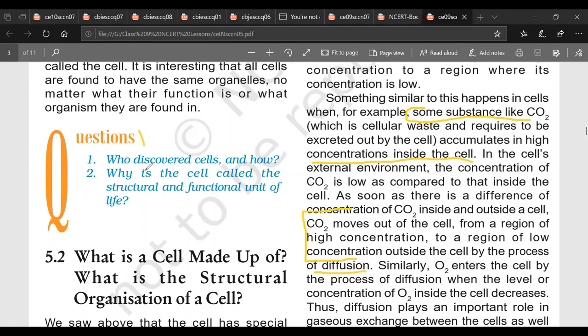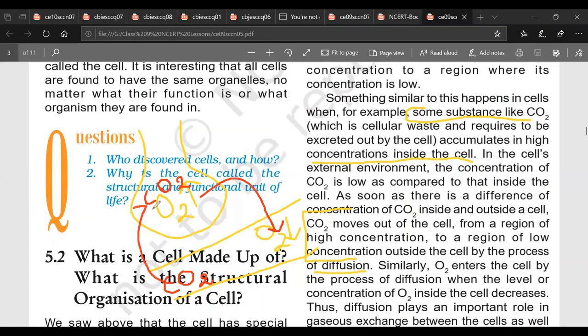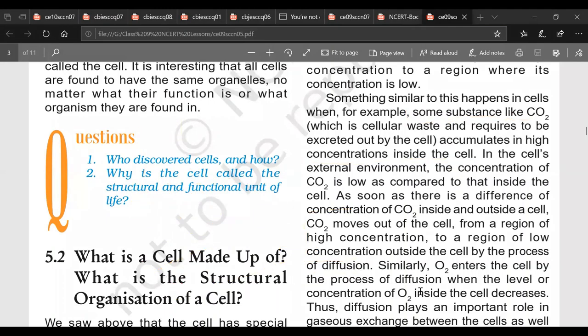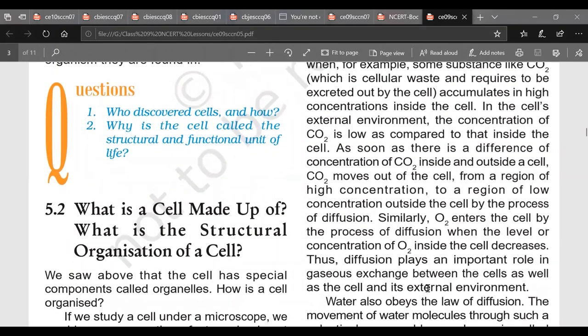Similarly oxygen enters the cell by the process of diffusion. Say when we are inhaling, say this is one lung alveoli. Here oxygen will be high because we are inhaling fresh air. And this is our blood capillary which has less of oxygen. It has less oxygen and lung alveoli has more oxygen. So now oxygen will move from higher concentration to lower concentration. Now CO2, since this blood has come from the tissues, so it is rich in CO2. And here in our lung alveoli, CO2 will be less because atmospheric air has less CO2. So carbon dioxide will move from blood to lung alveoli. So this is how gases are transported, are sent out of the cells or inside the cells. So diffusion plays an important role in gases exchange between cells as well as cell and external environment. So from last line also question can be asked.